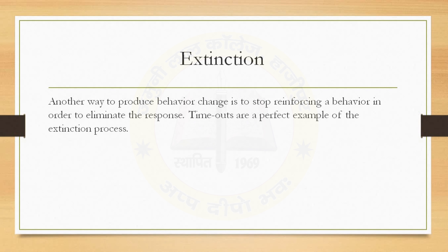Extinction is another behavior therapy. Another way to produce behavior change is to stop reinforcement of a behavior in order to eliminate the response. Time-outs are a perfect example of the extinction process. During a time-out, a person is removed from a situation that provides reinforcement. For example, a child who starts yelling or striking other children would be removed from the group and required to sit quietly in a place where there is no opportunity for attention and reinforcement. By taking away the attention that the child found rewarding, the unwanted behavior is eventually extinguished.